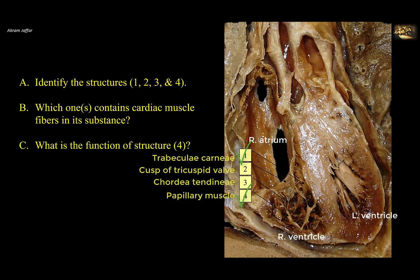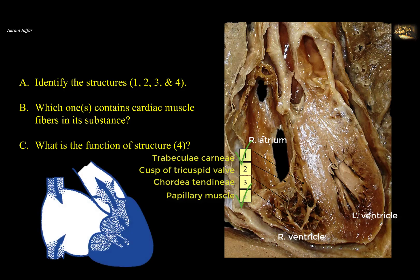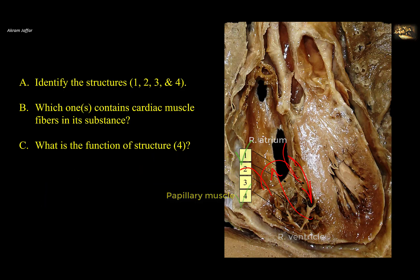Regarding part C of the question, what is the function of the papillary muscle? The papillary muscles contract prior to contraction of the ventricle, and therefore they tighten the chordae tendineae and draw the cusps of the atrioventricular valves together by the time ventricular contraction begins. This prevents ventricular blood from passing back into the atrium during ventricular contraction because the valves close, and at the same time they cannot be everted because they are pulled down by the chordae tendineae.